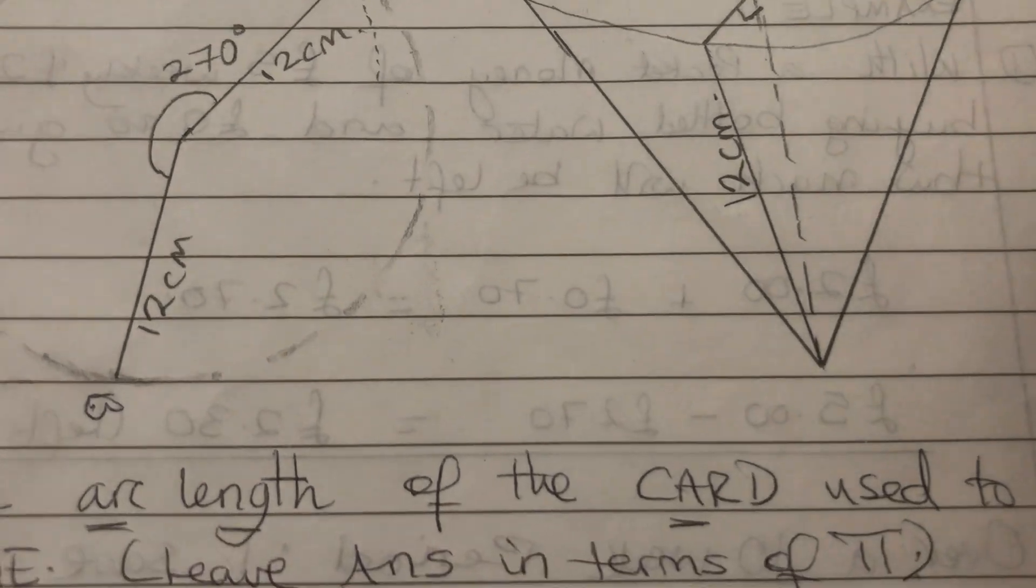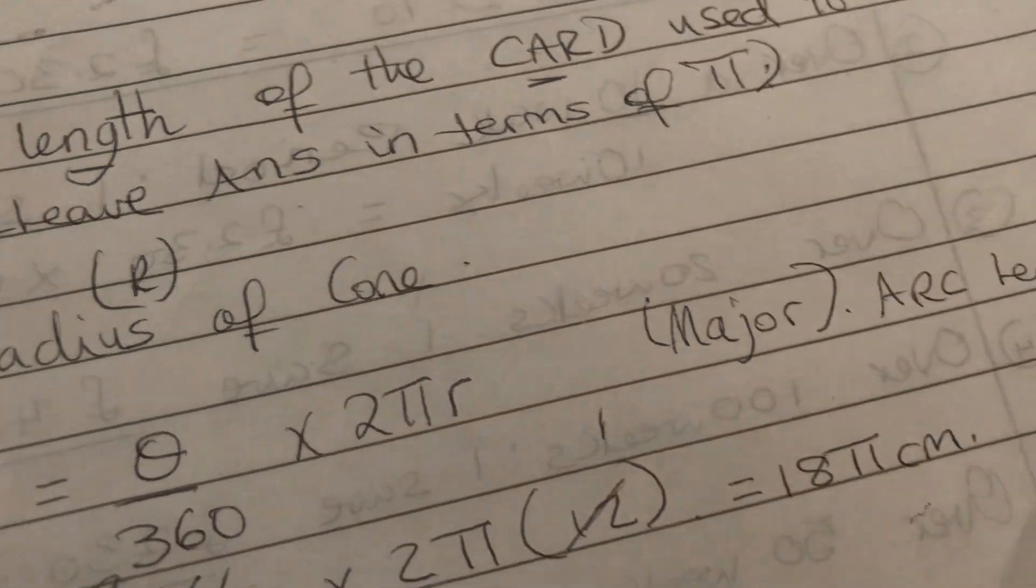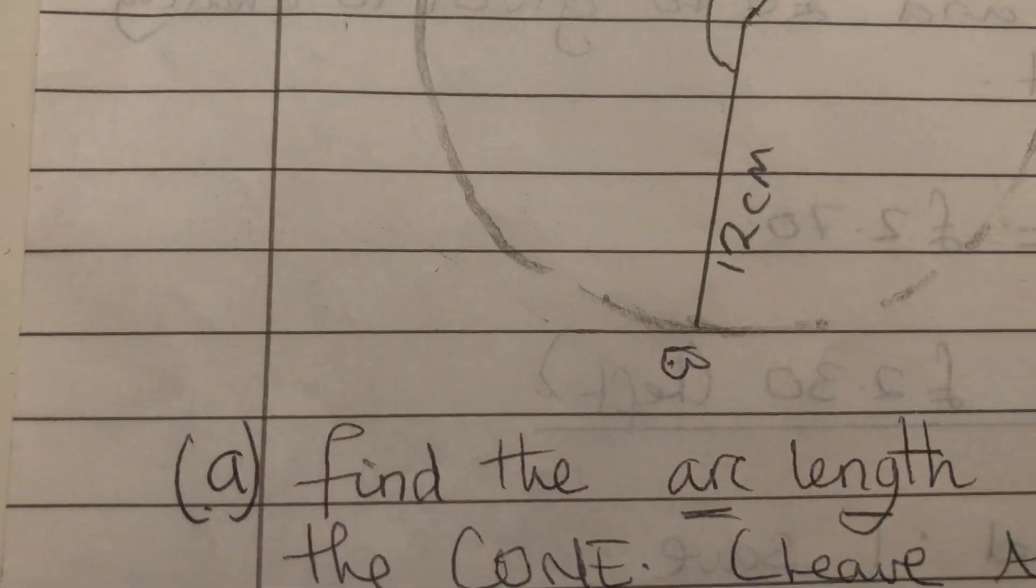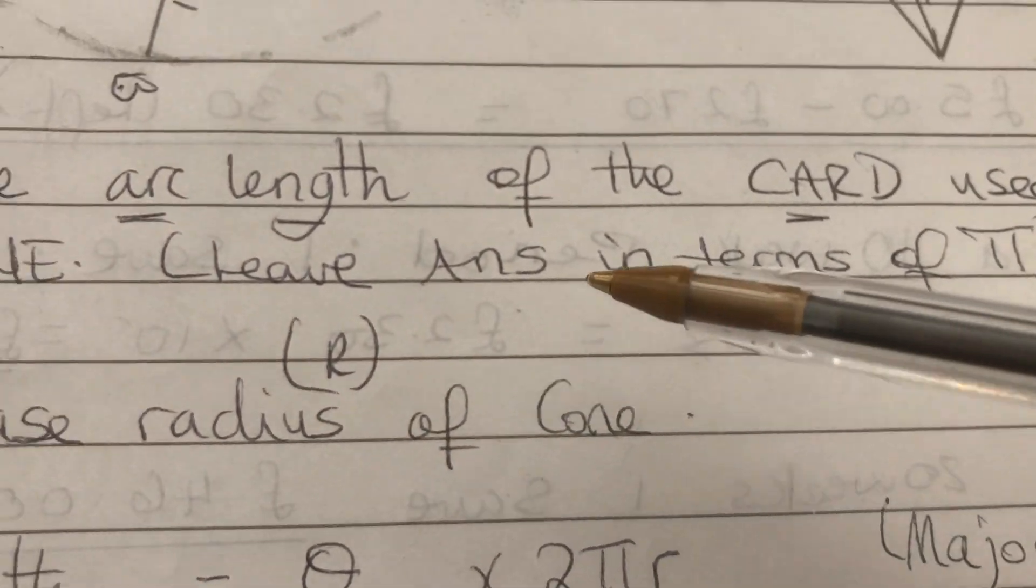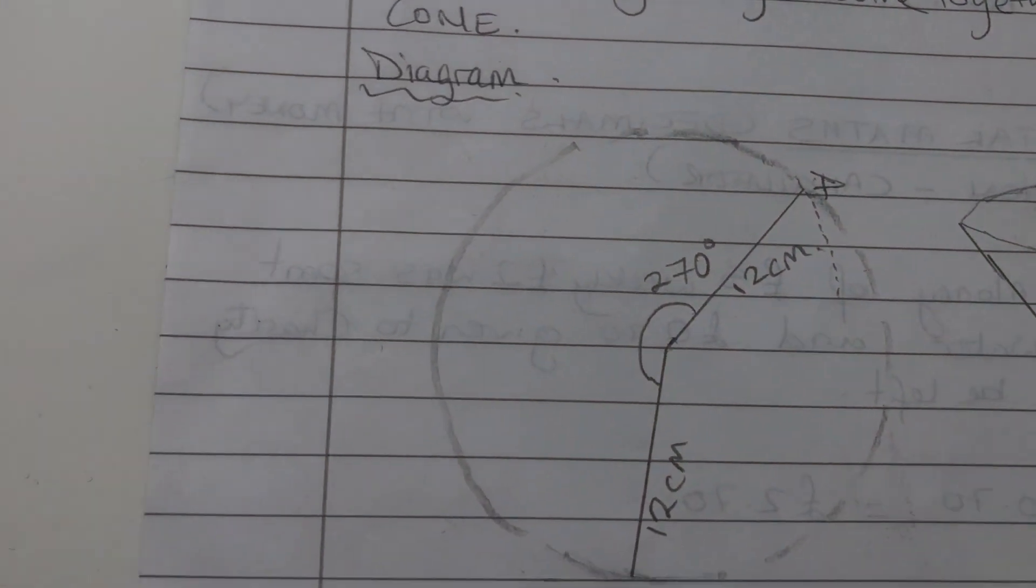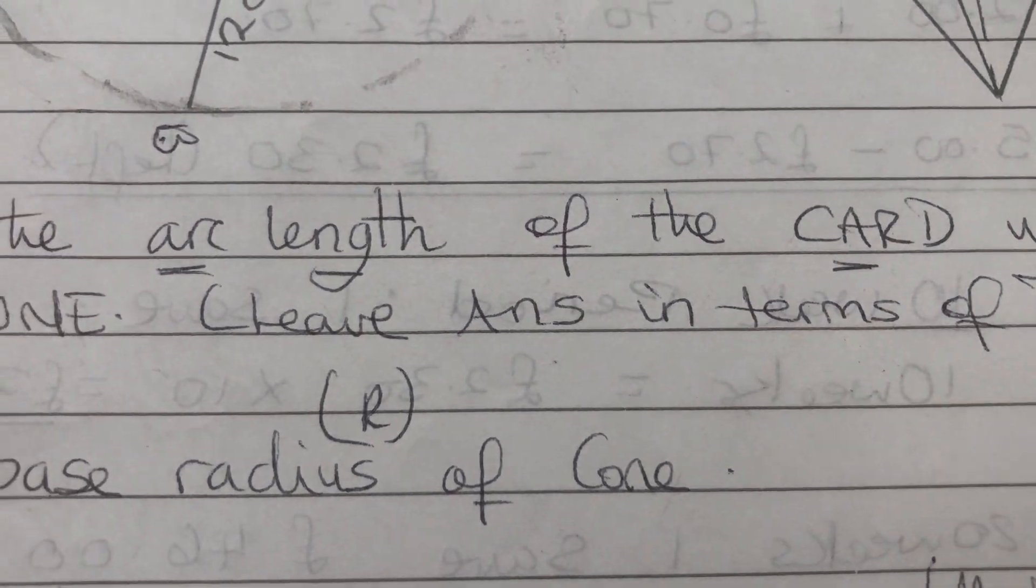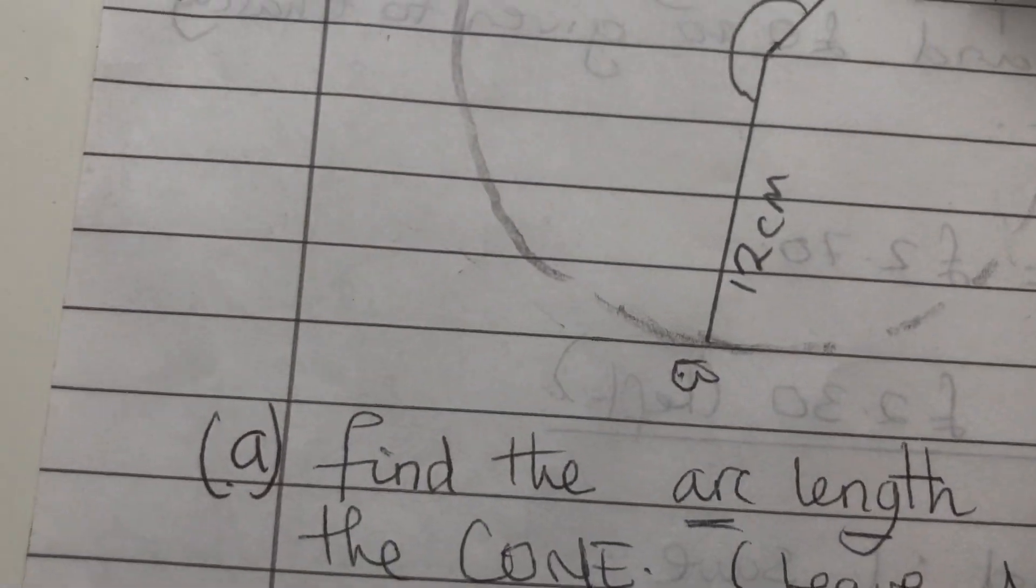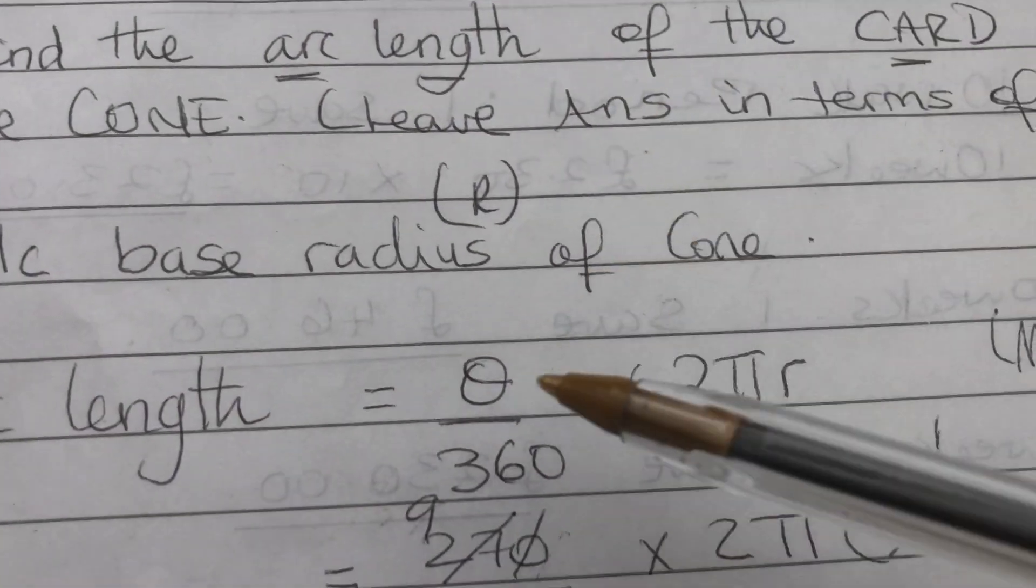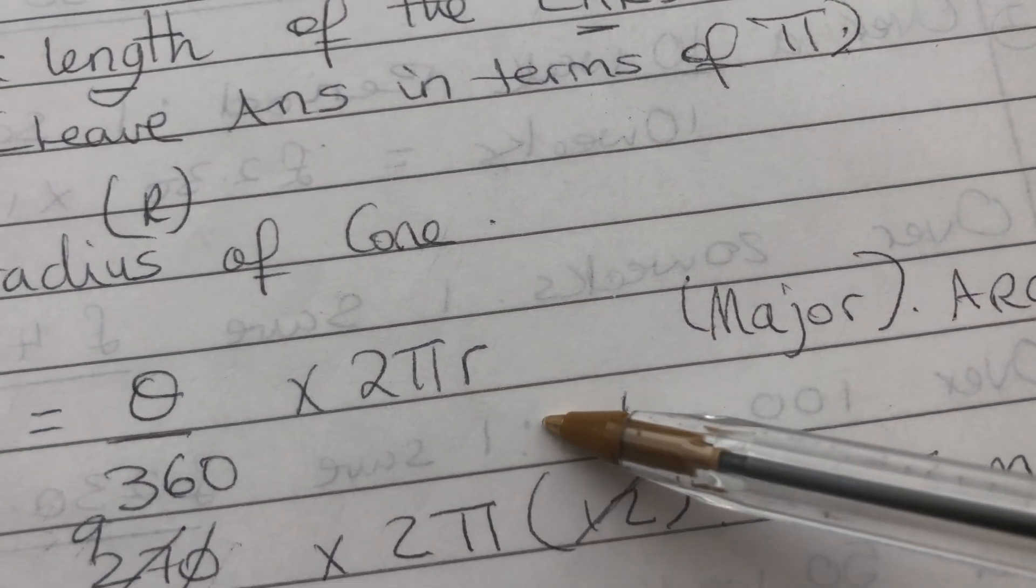You will come up with this. You will have a circular base. And then, the radius of the circle becomes the slanted height of the cone. So, here is 12 centimeters. So, that is your 12 centimeters. This, from the center, the middle of the cone, to the center, and then to the base, there is a 90 degrees here. Find the arc length of the card used to make the cone.